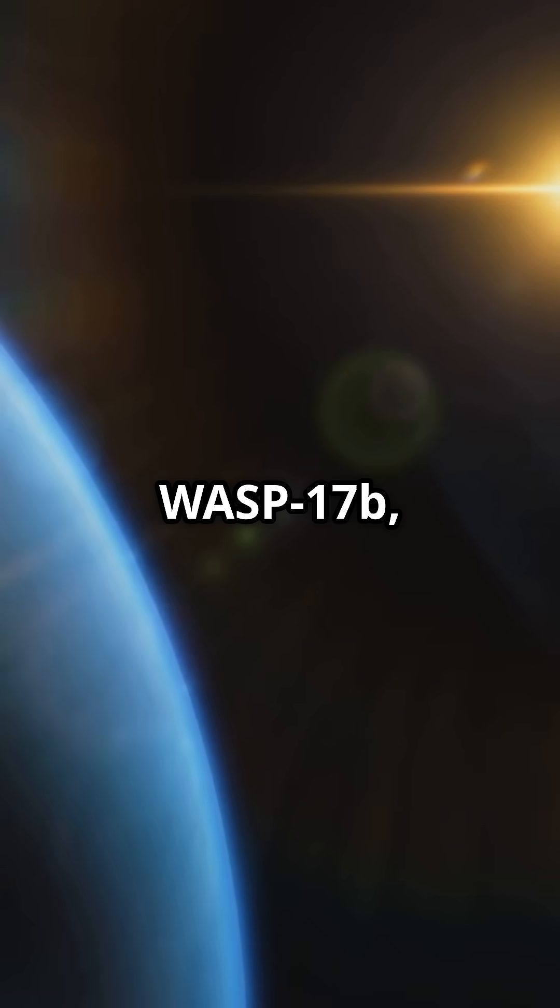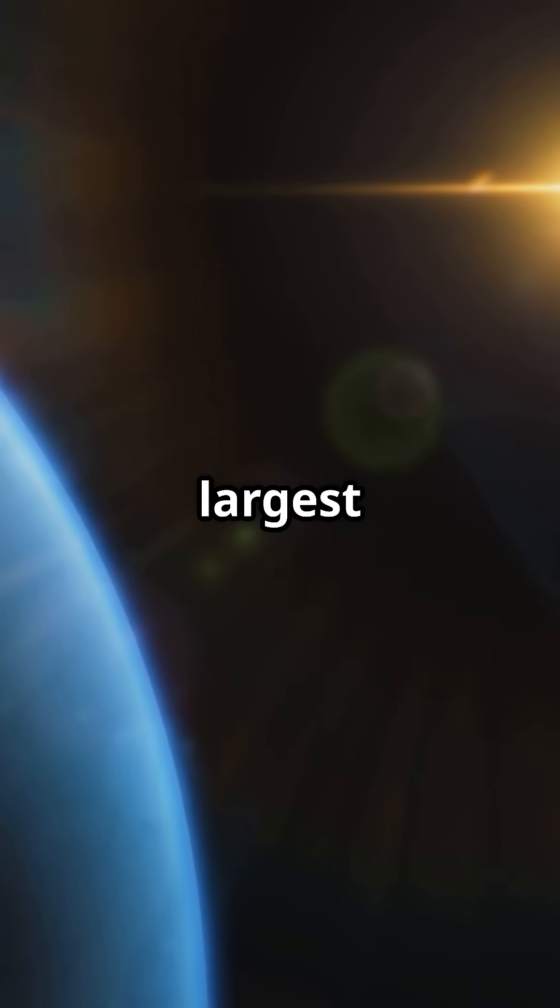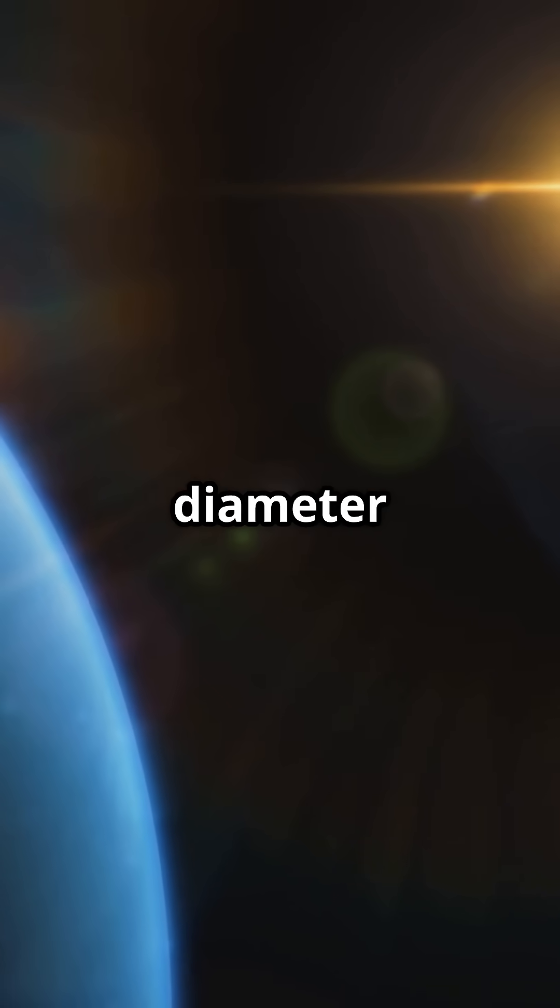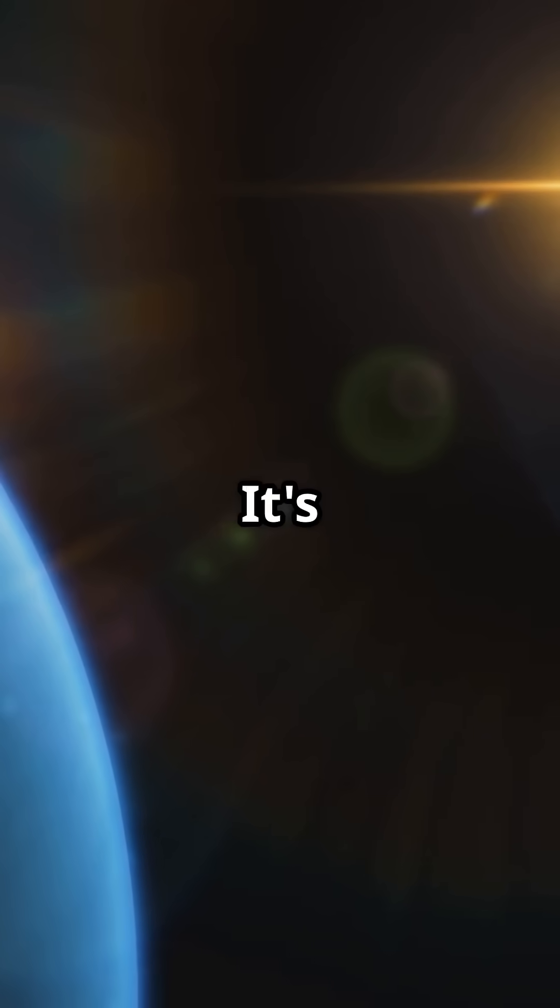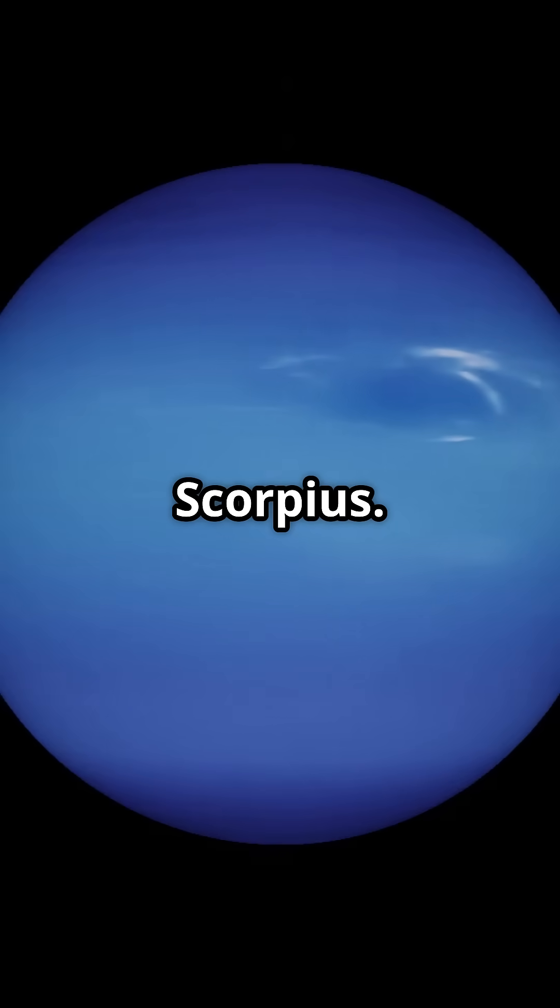Let's not forget WASP-17 b, one of the largest exoplanets known, with a diameter almost twice that of Jupiter. It's located about 1,000 light-years away in the constellation Scorpius. WASP-17 b is notable for its retrograde orbit, meaning it orbits in the opposite direction of its star's rotation.